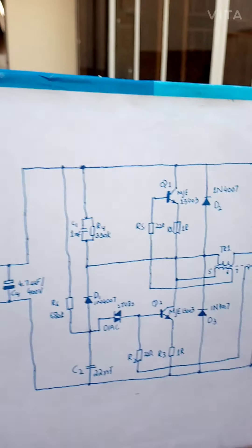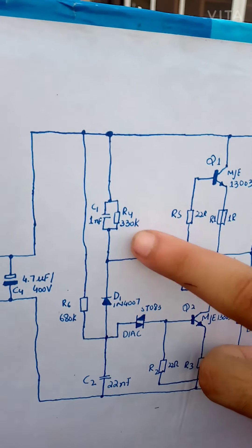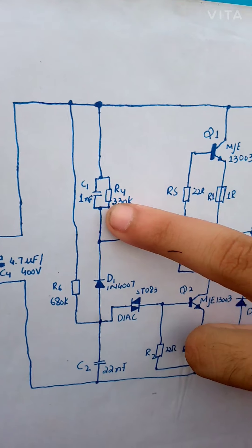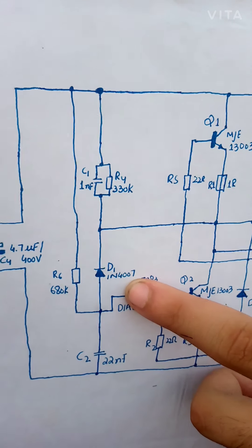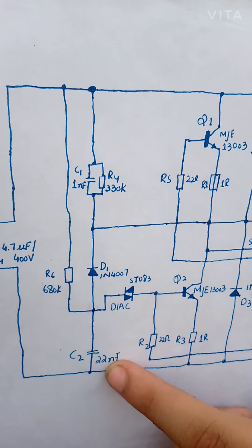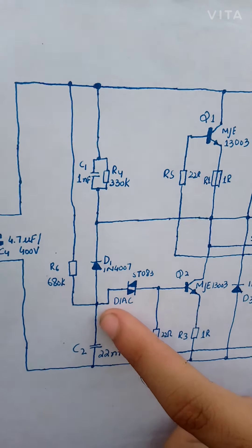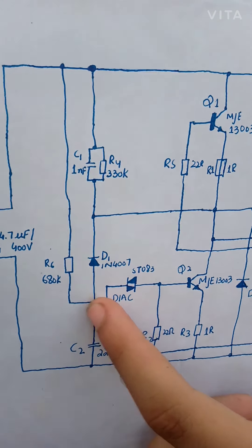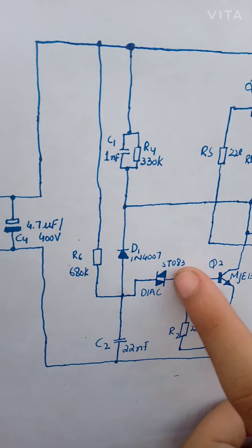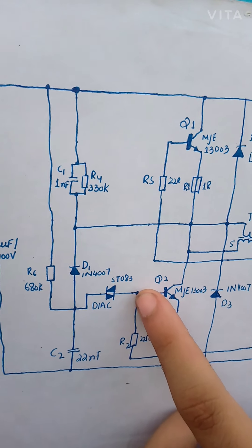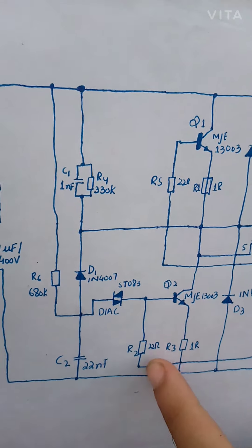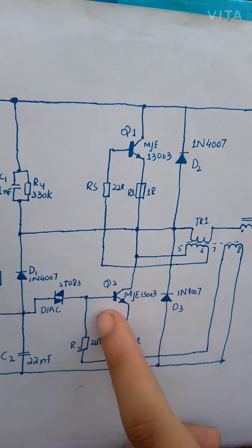It is made with 1N4007 diodes, four pieces. Next, the positive line, same, connected are 330 ohms and 1 nanofarad in parallel, and 1N4007 diode to another capacitor.